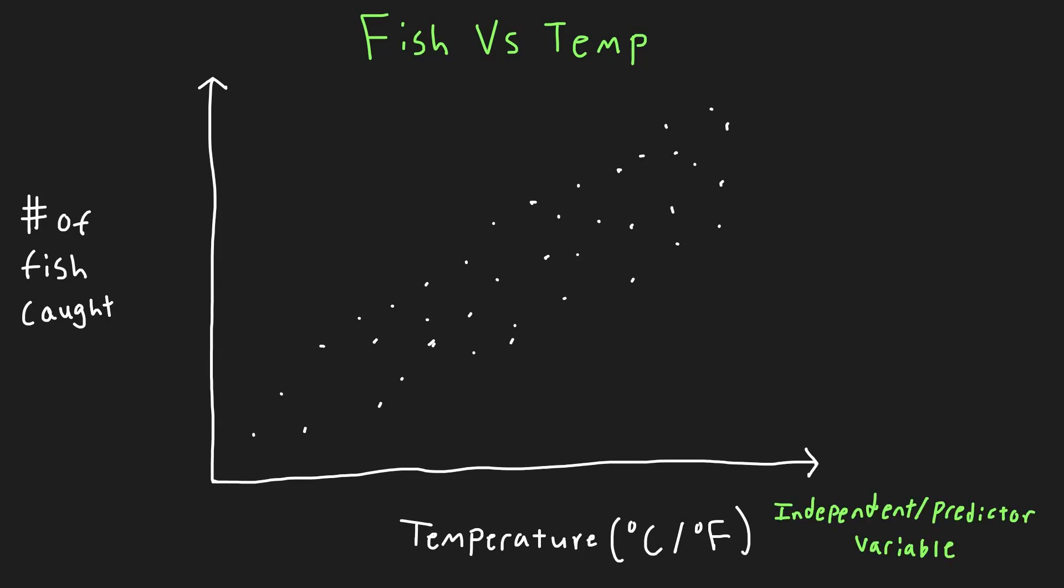The temperature at the bottom is our independent or predictor variable, the thing we are using to help us make a prediction. The fish caught is our dependent or response variable and depends directly on the average temperature that day.